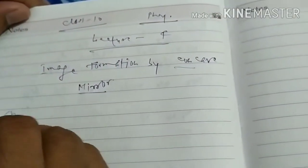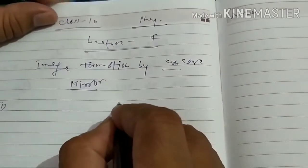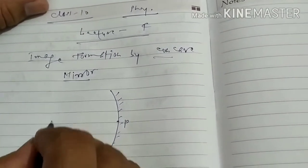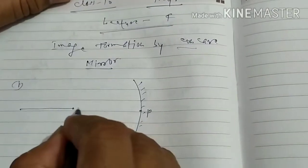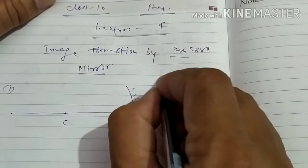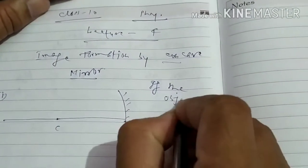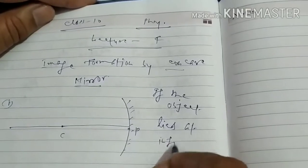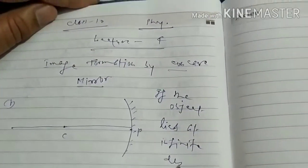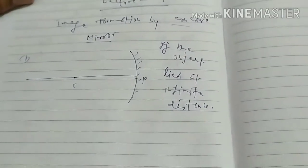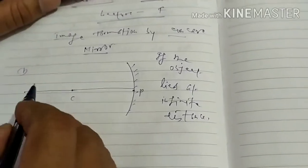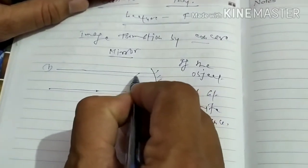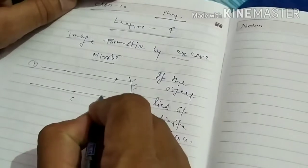Image formation by concave mirror, first case. Suppose this is a concave mirror — this is the pole, this is the center of curvature, and this is the principal axis. In the first case, if the object lies at infinite distance — that is, a very far distant object — then rays of light parallel to the principal axis, after reflection, meet at a point on the principal axis.